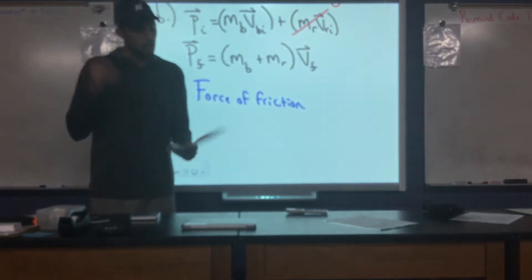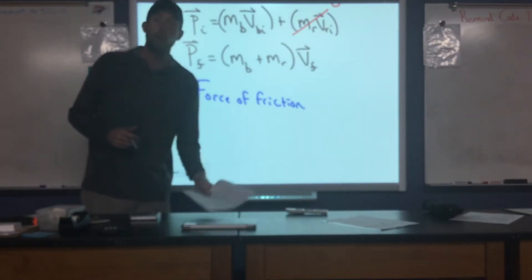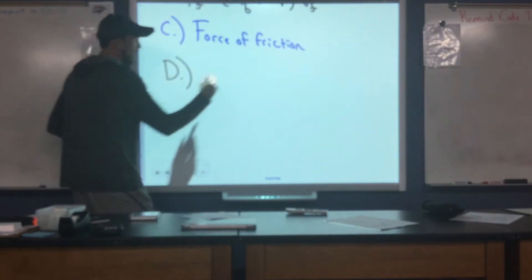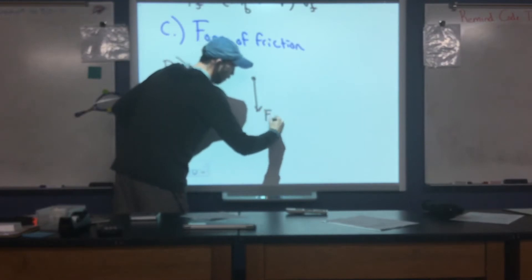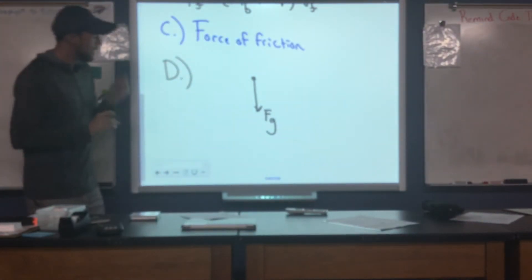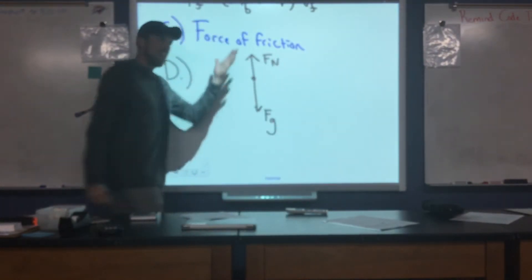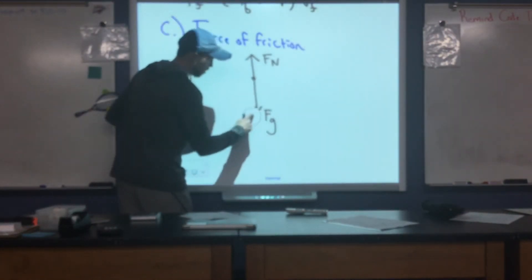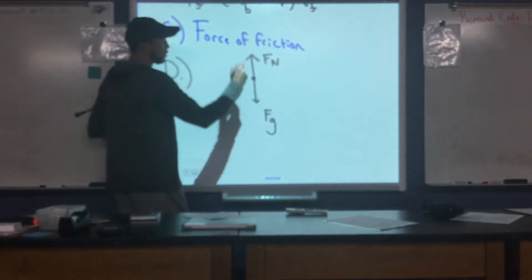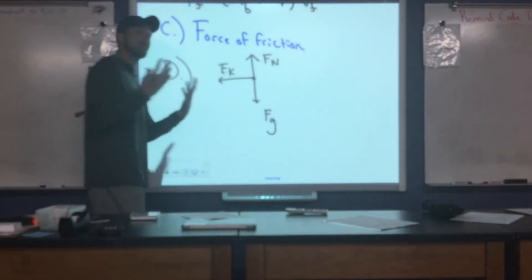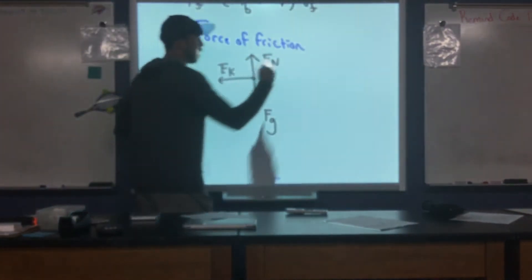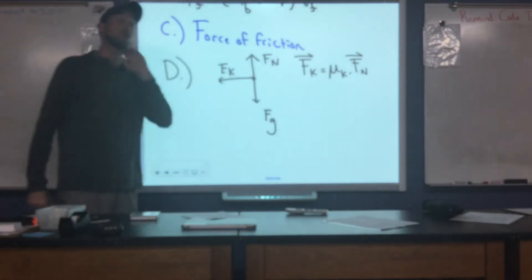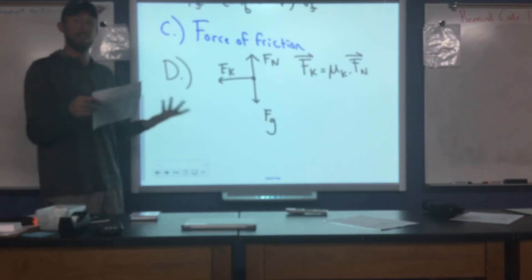Part D wants us to draw a free-body diagram and apply Newton's second law to find the force of friction. After the collision, the cars have a force of gravity acting on them, a normal force assuming they're in contact with the road, and the force of friction working to the left to slow them down. The friction force is F_k = μ_k × F_N. We're given the coefficient of friction as 0.9, so we need to find the normal force.